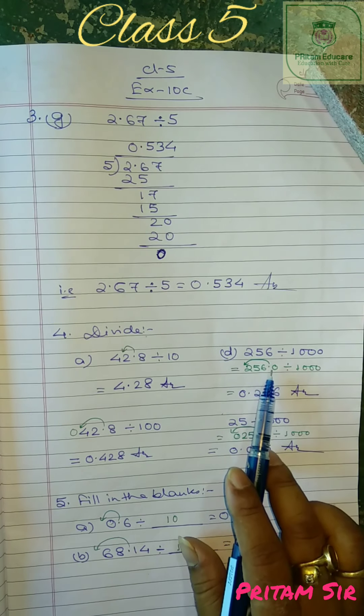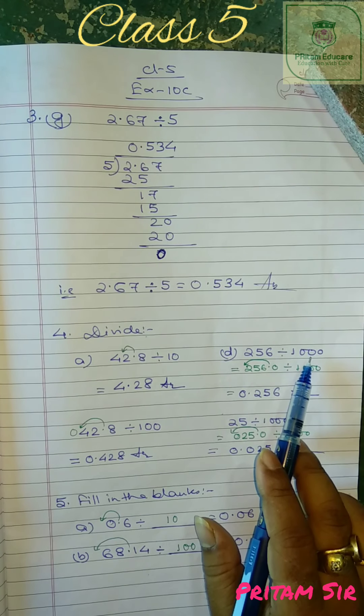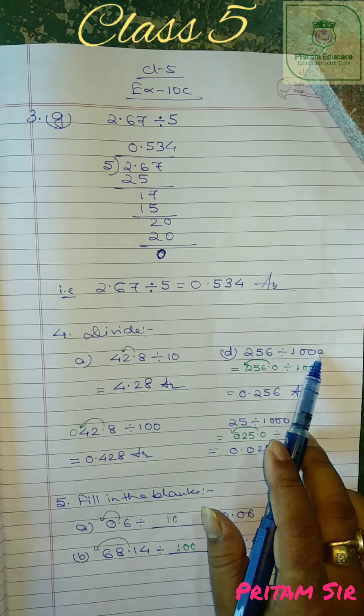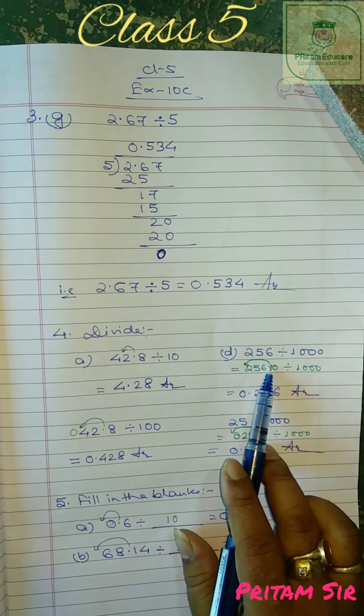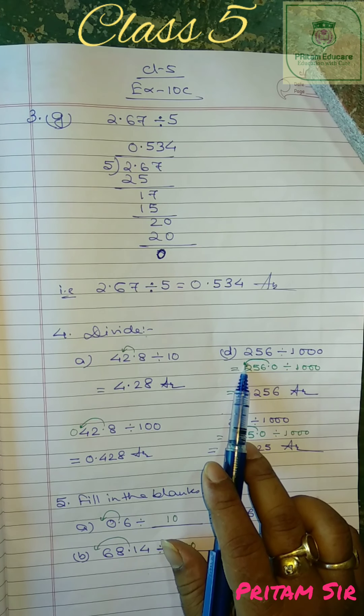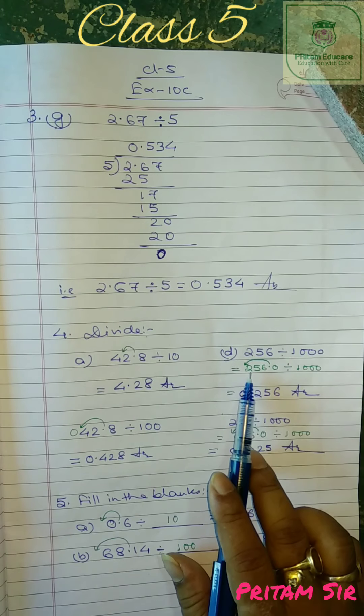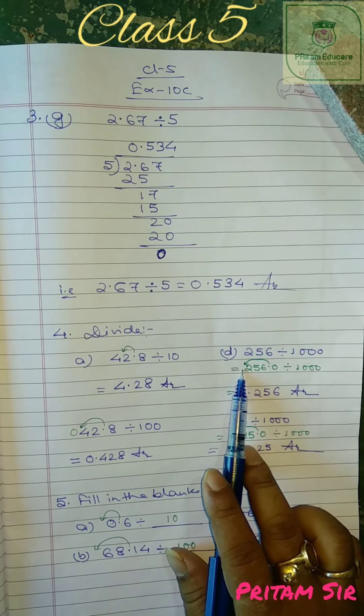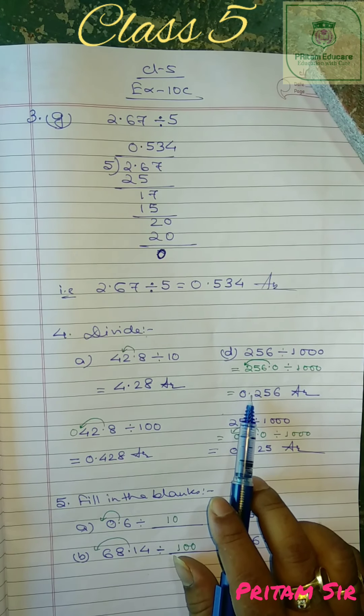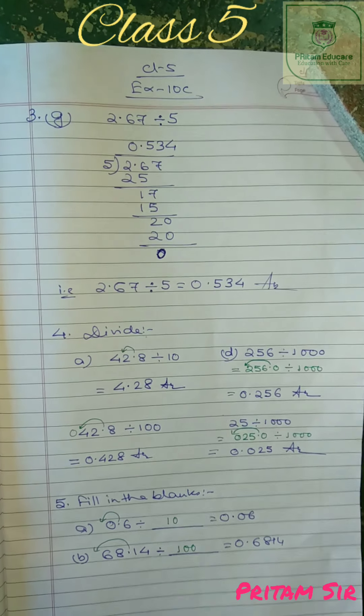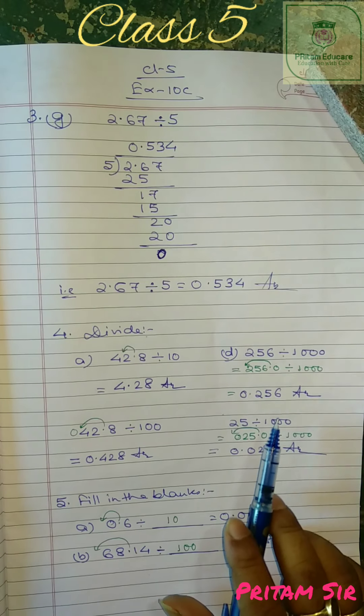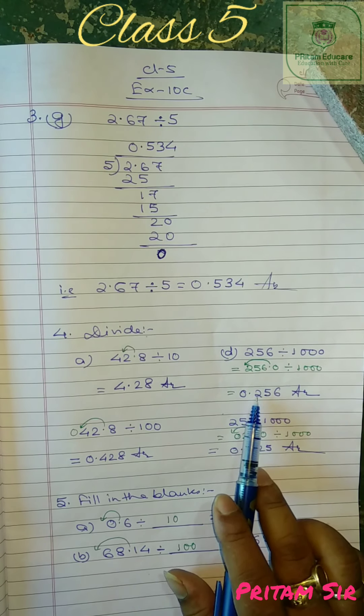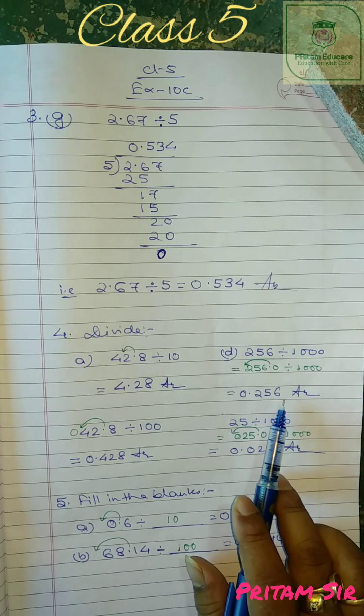256 is a whole number, 256.0. So now the decimal number, the three digits, so the decimal number is shifting to three digits left. Now that means the decimal is coming before two. Before two means we have to take 0. So 0.256 is our answer.